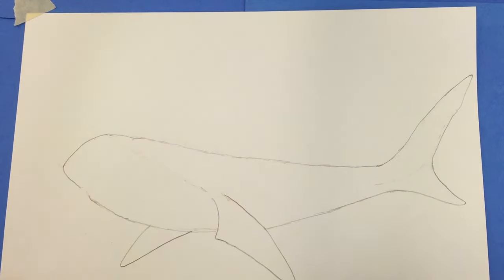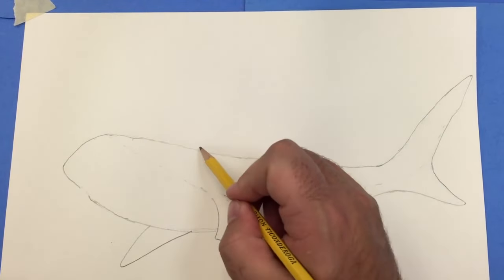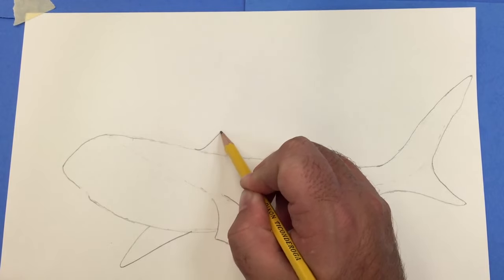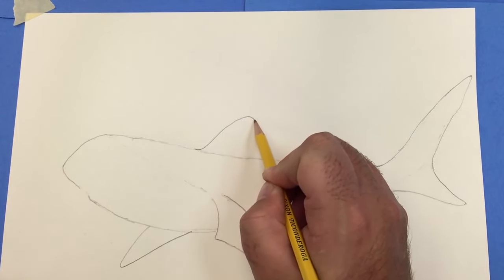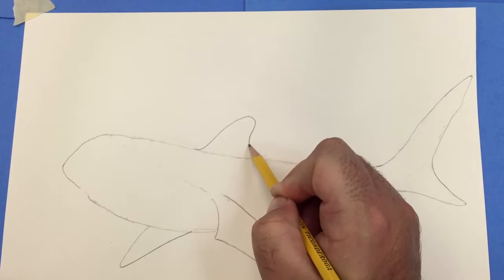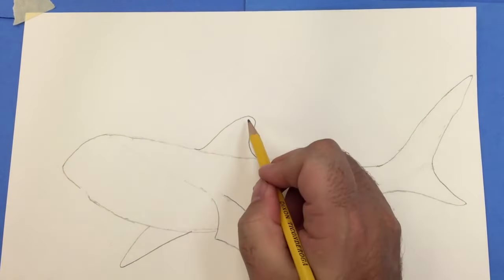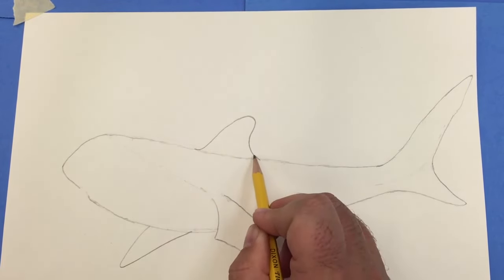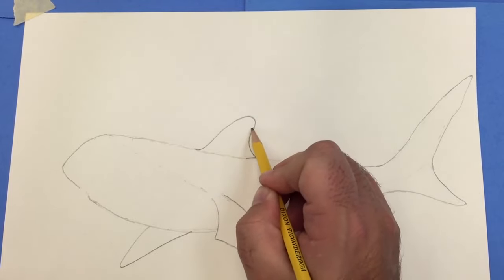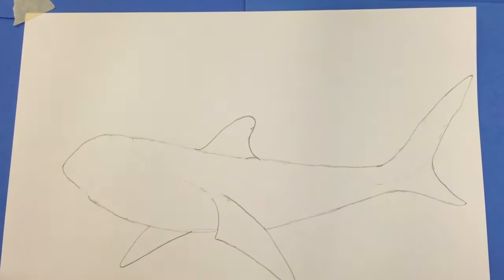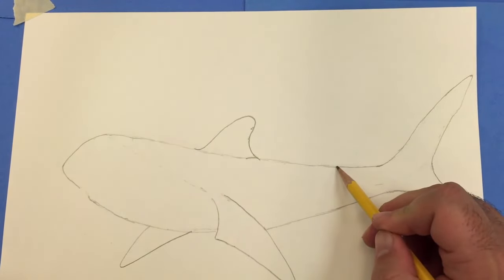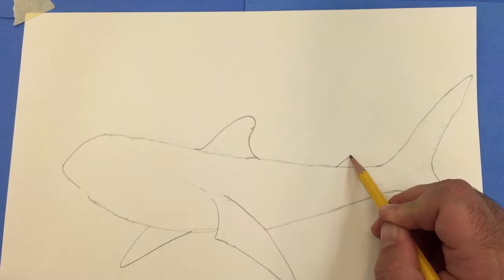Next I'm going to add the dorsal fin, which is that fin that comes up from the back. With the tiger shark, they're just kind of slightly rounded at the top with a little notch down here. And we have a second but smaller fin close to the tail at the top of the shark's body here.